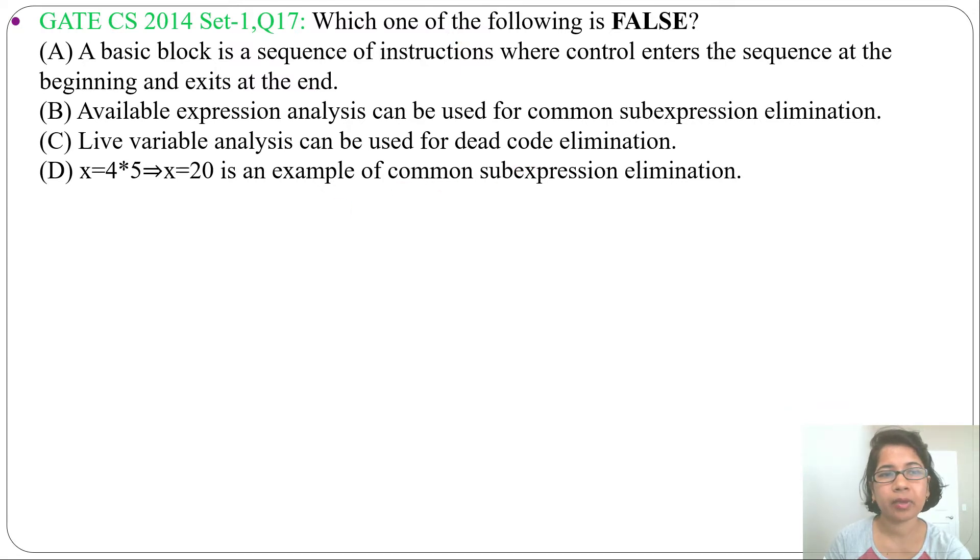Let me analyze one by one option. Option A: A basic block is a sequence of instructions where control enters the sequence at the beginning and exits at the end. This is true. In basic block, always control enters at the beginning and exits at the end. Suppose this is a basic block, then control always enters here and exits at the end. So option A is true.